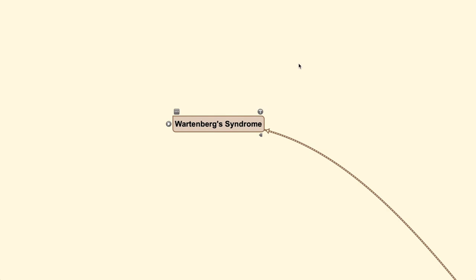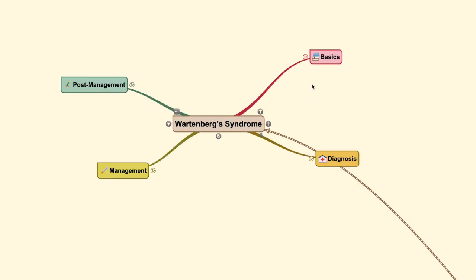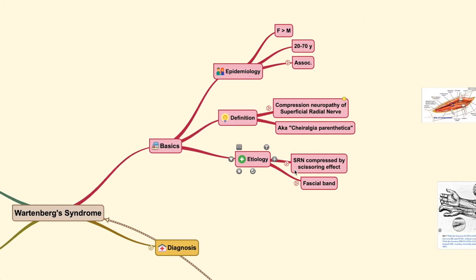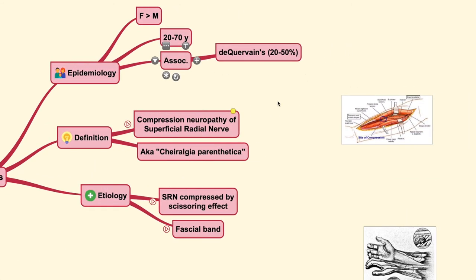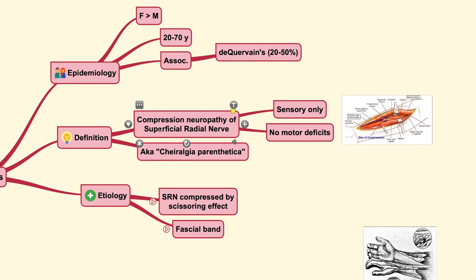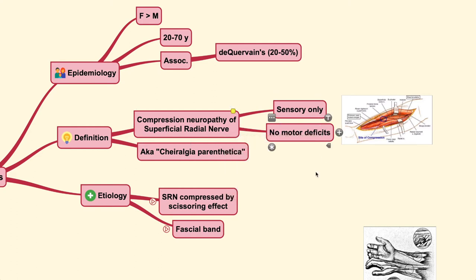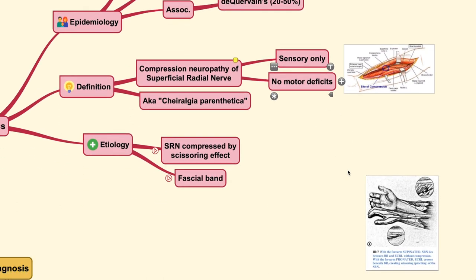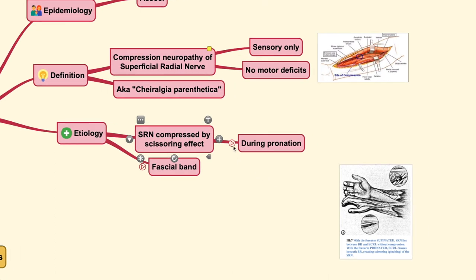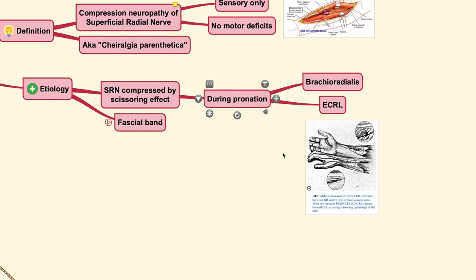The last site of radial nerve compression neuropathy is Wartenberg syndrome. It is known as Wartenberg syndrome because it is located at a very specific site, and it is usually found in association with de Quervain's disease. Wartenberg syndrome is a compression neuropathy of the superficial radial nerve. We know that the radial nerve has two branches: the PIN, discussed in the previous video, and the superficial radial nerve, which carries only sensory information and no motor functions. The nerve can be compressed during certain movements, especially pronation.